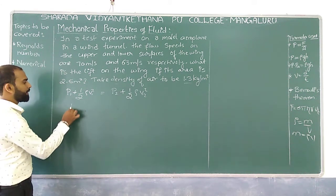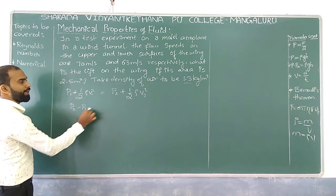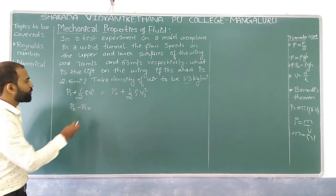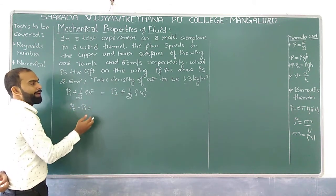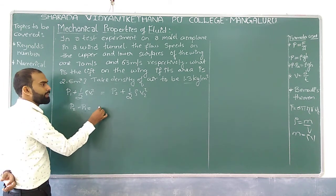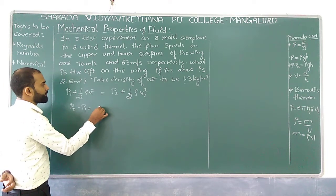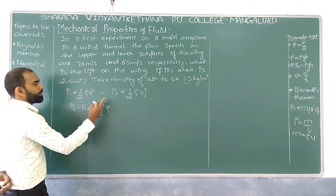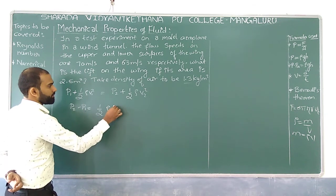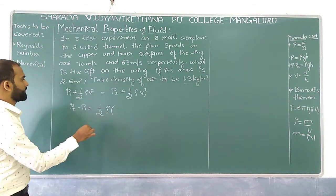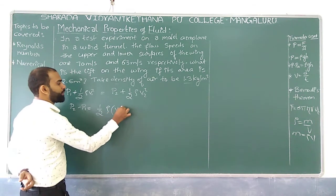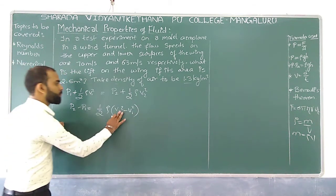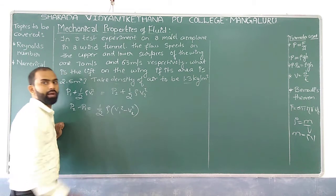Since height remains constant for both upper and lower surfaces — the depth difference is negligible — we simplify to find the difference in pressure P2 minus P1, which equals half rho into V1 square minus V2 square. Substituting: V1 is the upper surface velocity of 70 meters per second, and V2 is the lower surface velocity of 63 meters per second.